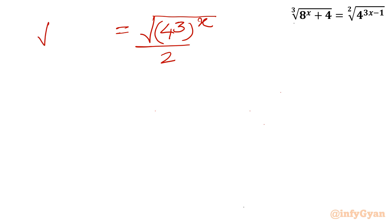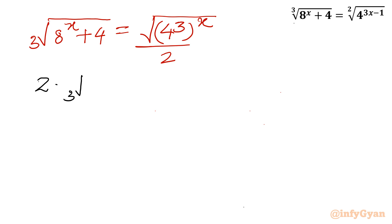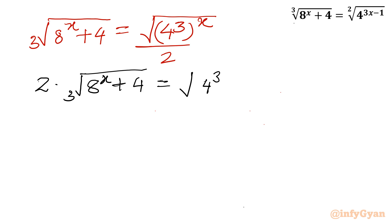Now let us write our equation. LHS will be as it is: cube root of 8^(x+4). RHS is converted into (4^3)^x over 2. Let us multiply both sides of the equation by 2. So we get 2 times cube root of 8^(x+4) equal to (4^3)^x, which is square root of 4^3, whole power x.